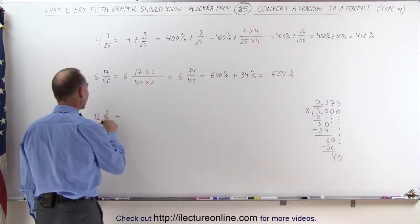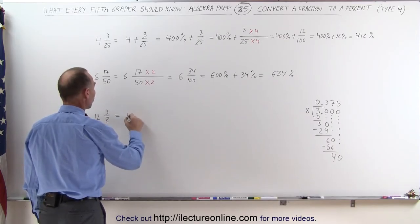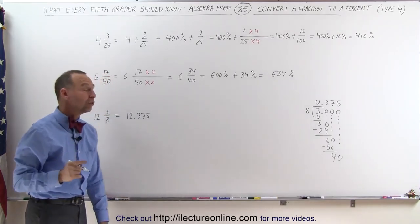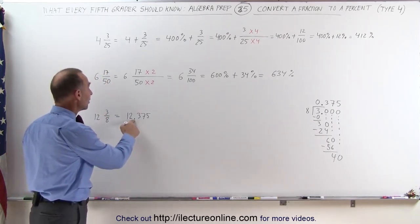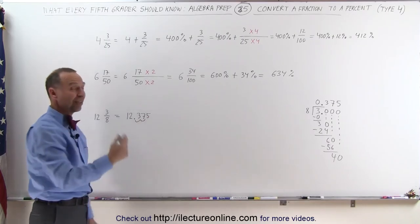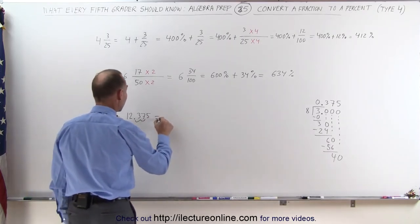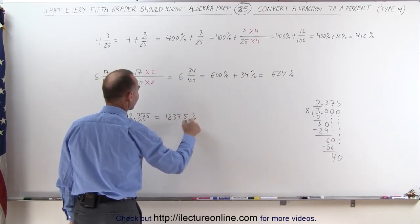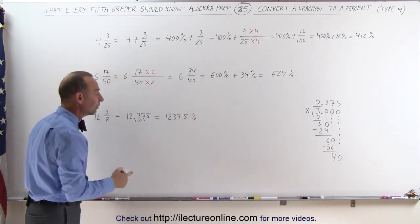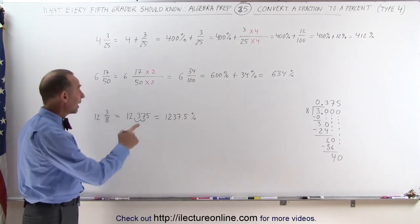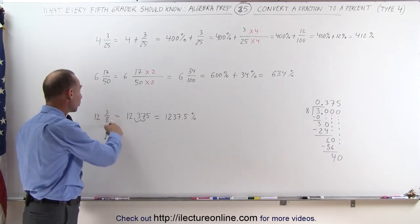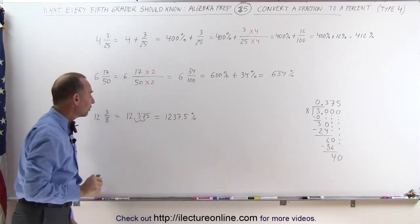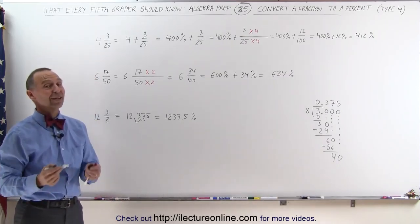Which means I can write 12 and 3/8 as a decimal, 12.375. Now we can turn this into a percent by simply moving the decimal place over two spots, 1, 2, and put a percent sign behind it. This is therefore equal to 1,237.5 percent. And so if you cannot turn the denominator into 100, then the best thing to do is to go ahead and do a longhand division on the fraction portion here, add it to the whole number, and then move the decimal place over two spots. And that's how it's done.